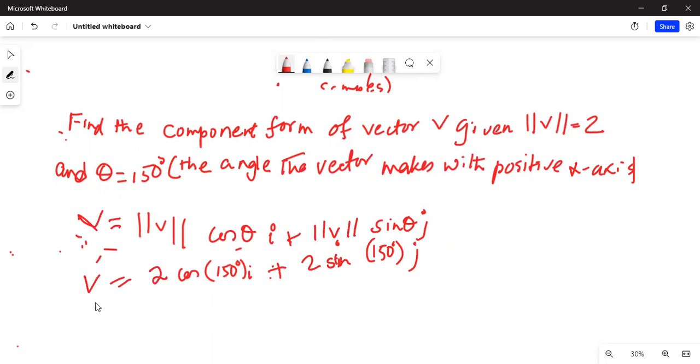That means vector v in component form is equal to 2 cosine 150. Cosine 150 is in the second quadrant, so it will be negative minus half i plus 2 sine 150 degree in the second quadrant, so it will be positive, square root of 3 by 2 j.